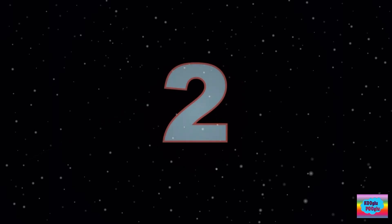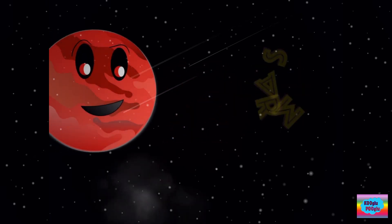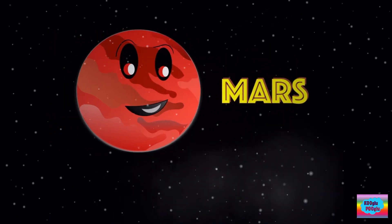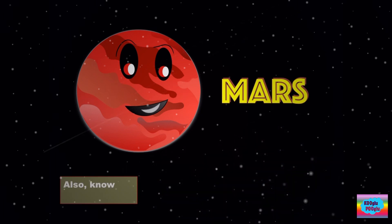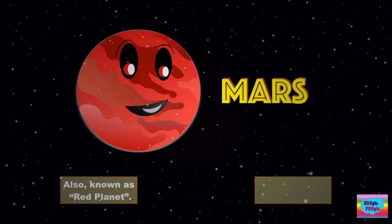On to the next one, which is Mars. I'm the cool kid of the solar system, also known as the Red Planet. Yeah, I'm super red. Second smallest planet, and the radius is 3,390 kilometers.